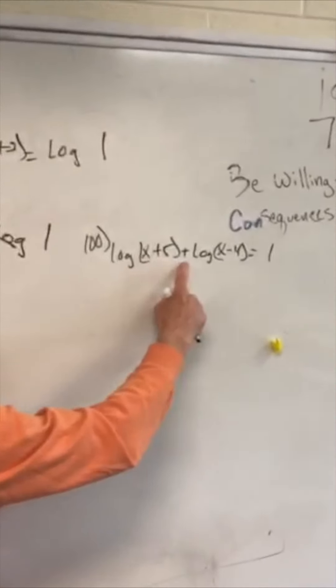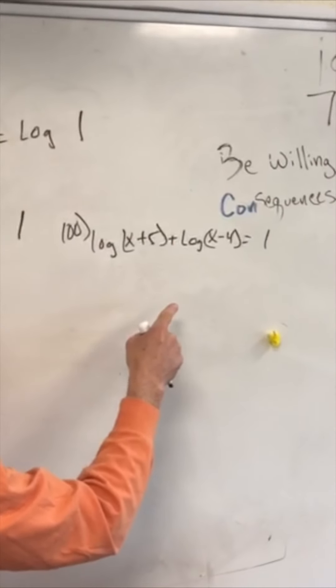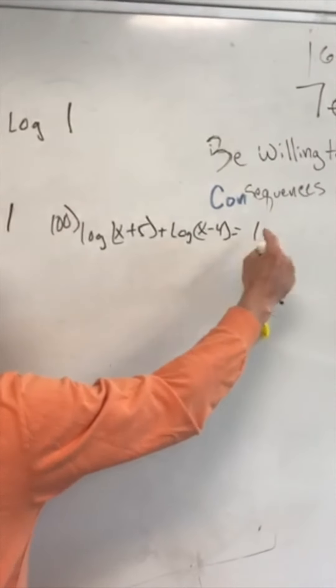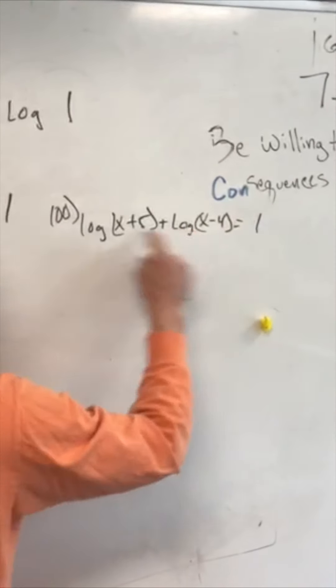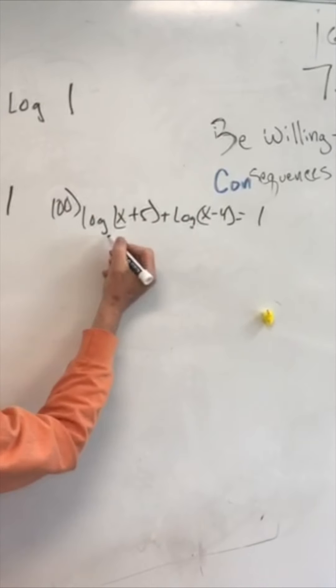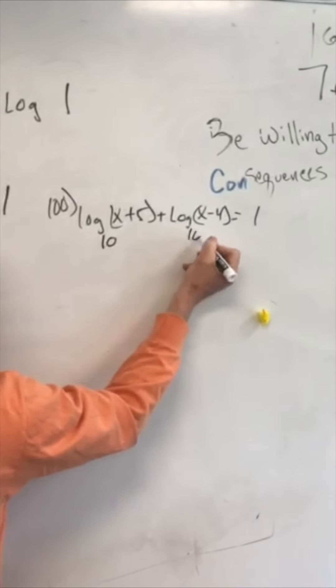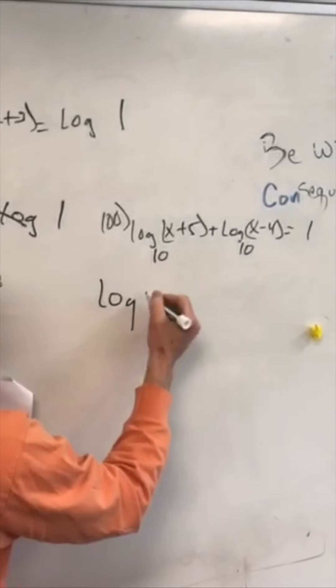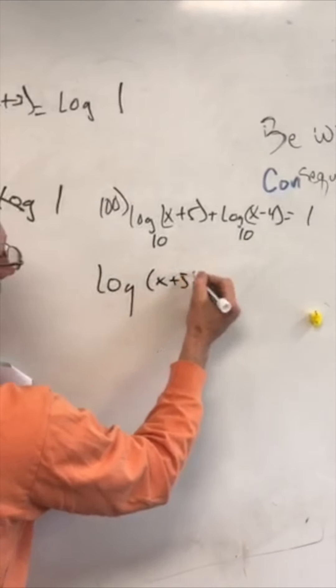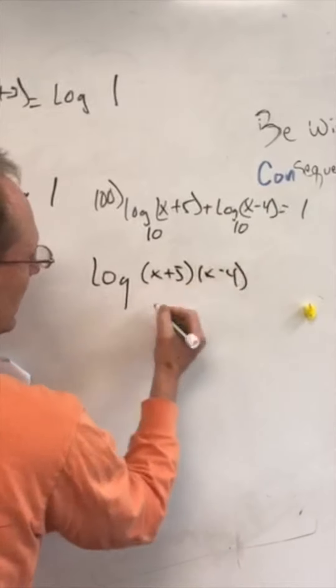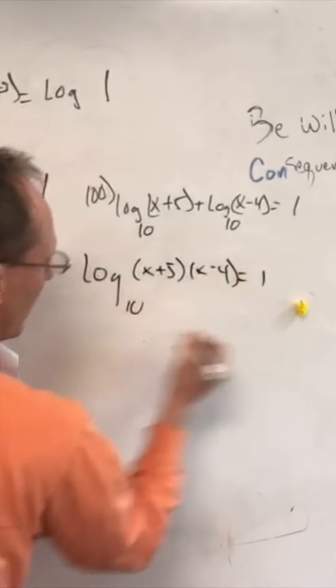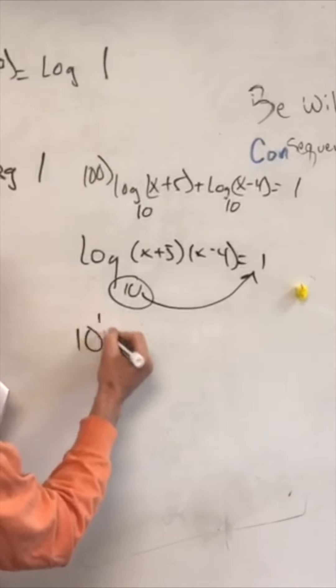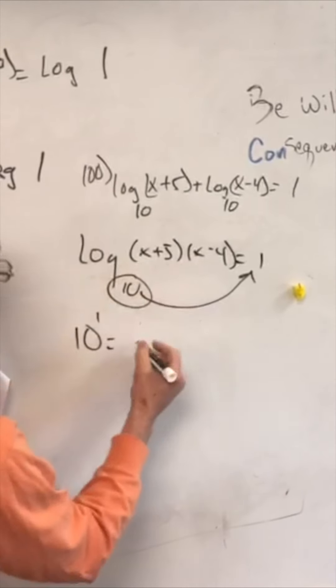And then finally, 100. We got a plus again. So we know we're going to multiply. We don't have any basis here and we don't have a log on this problem. So if it's not a log on this one, we need these basis. If it's not written, then you always put it as a 10. All right. Logs are based on 10. So now we're going to put this together. x plus 5 times x minus 4. Base 10 equals 1. We're going to change it to an exponent. We bump it up. 10 to the first power equals this multiplied together, which is x squared plus x minus 20.